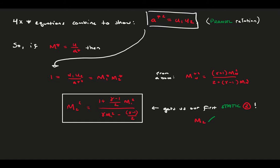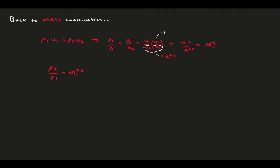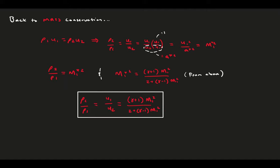You might be starting to see a pattern in these derivations — no complex calculations, just conveniently combining equations to tell us what we want to know. Let's speedrun the next one. Starting with conservation of mass and multiplying by U over U, we redefine using the Prandtl relation as the characteristic Mach number. The characteristic Mach number squared at point 1 gives the static density ratio. Using the characteristic Mach number as a function of the regular Mach number, we combine to get a function describing the density ratio as a function of the upstream Mach number. The velocity ratio is the inverse of the density ratio from conservation of mass — giving us rho2 and u2.